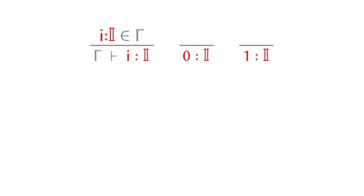In general, you have the variable i as the interval, if it's declared to be an element in the interval in the context. Then you also have 0 as an endpoint in the interval, and also 1 as an endpoint in the standard interval.